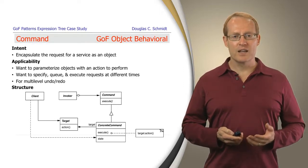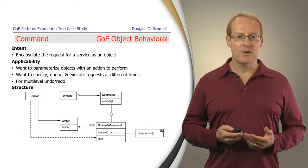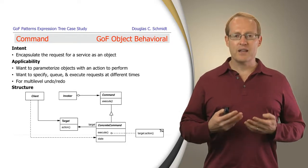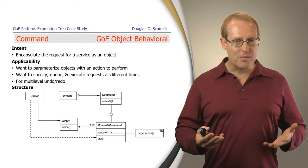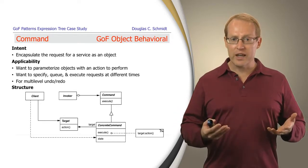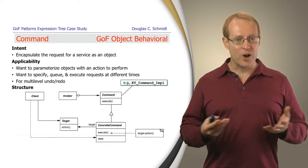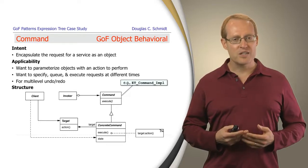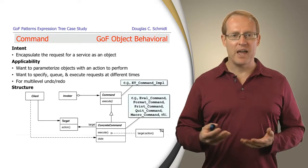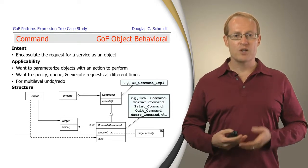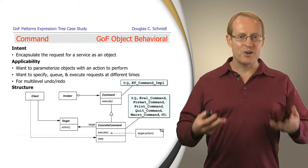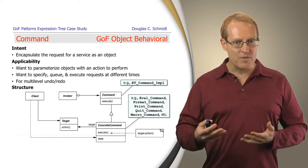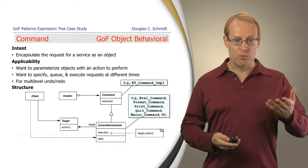The diagram at the bottom of the slide illustrates a common way of structuring the pieces for this pattern. You have some kind of invoker that executes a command, and that command typically then delegates to some concrete command that actually performs the operation on a target. In our particular example, the ET command impl base class plays the role of the command class here. We can have different kinds of commands — print command, expression command, quit command, macro command, eval command, and so on — that inherit from the command impl and flesh out different types of behaviors when their execute methods are called from the bridge interface.